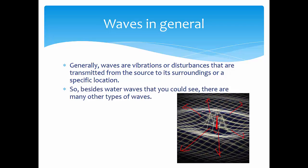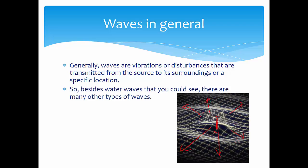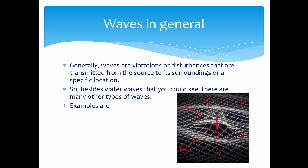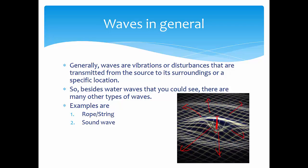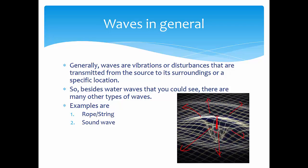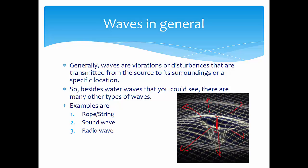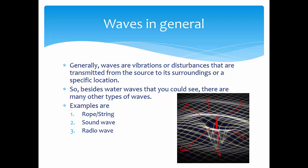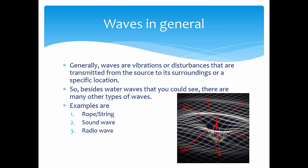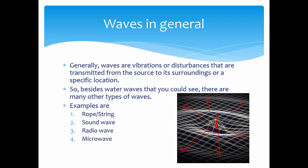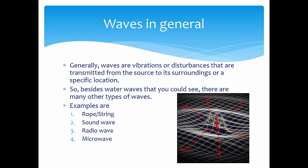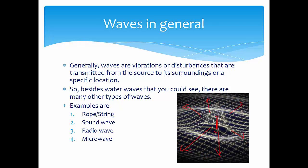Besides water waves that you can see, there are many other types of waves. Some examples are a wave that is on a rope or string, or sound waves. Actually, sound is a form of wave but you can't see it, or the radio waves that enable radio stations to broadcast their transmission to your radio, or even the microwave that is residing in your kitchen is also using some form of wave.